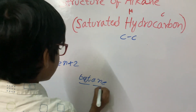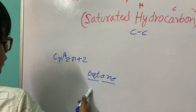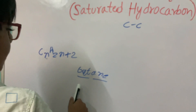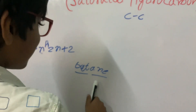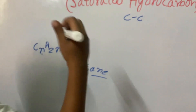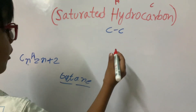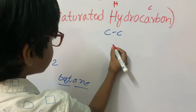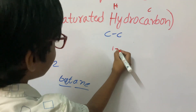The name consists of two parts. The first part is the number of carbon atoms. The second part is the family name. The number of carbon atoms is represented by a prefix.